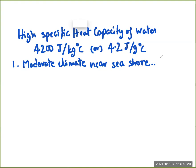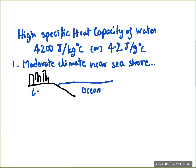Apart from geographical factors, there's a huge water body right next to these cities. When solar radiation falls over the ocean, the water starts absorbing heat. Land, in comparison, absorbs much less heat energy per degree celsius rise. So the ocean ends up accepting an enormous amount of energy and basically acts as a heat reservoir.